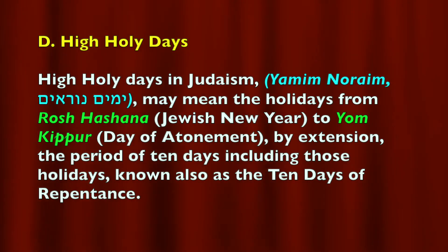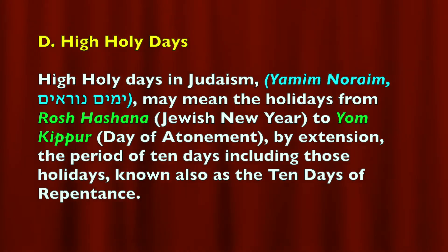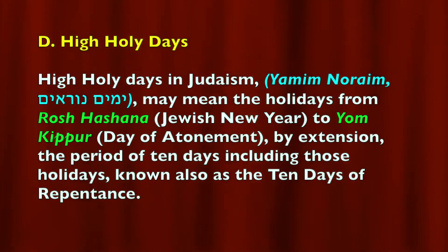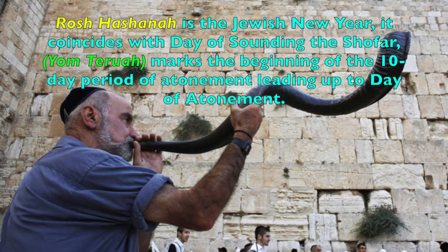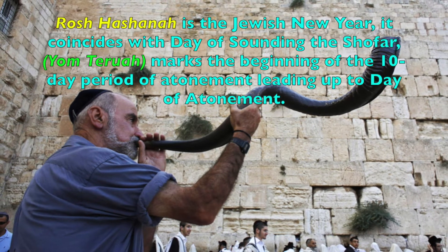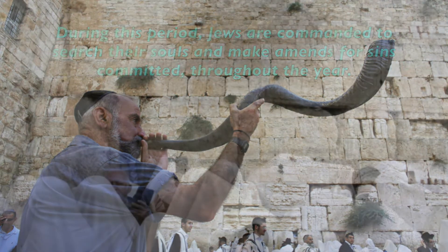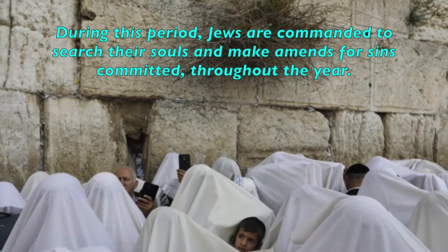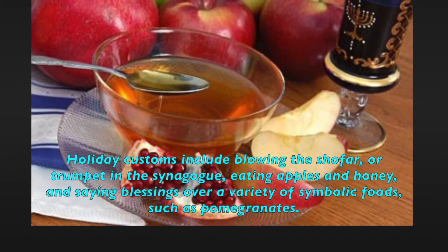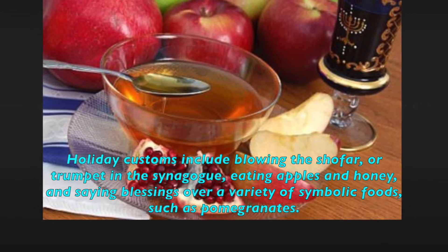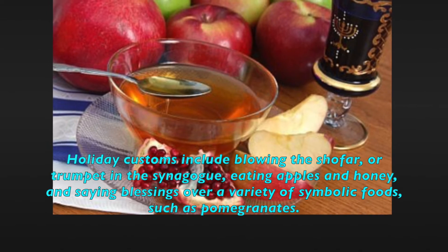Aside from the pilgrimage festivals, there are also the High Holidays. In Judaism, High Holidays refers to the period from Rosh Hashanah, the Jewish New Year, to Yom Kippur, the Day of Atonement — a period of ten days also known as the Ten Days of Repentance. Rosh Hashanah coincides with the day of sounding the shofar, Yom Teruah in Hebrew, and marks the beginning of the ten-day period of atonement. Jews are commanded to search their souls and make amends for sins committed throughout the year. Holiday customs include blowing the shofar in the synagogue, eating apples and honey, and saying blessings over symbolic foods such as pomegranates.